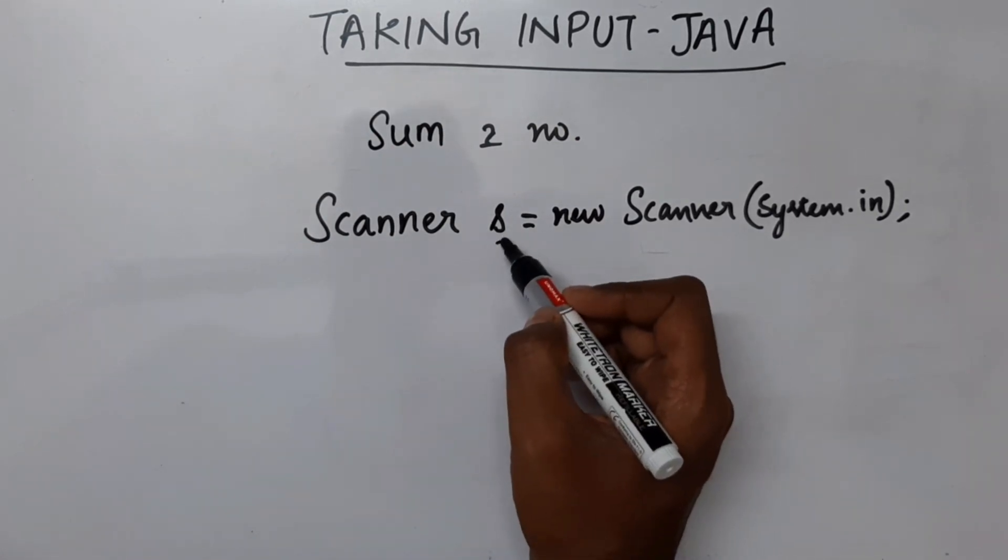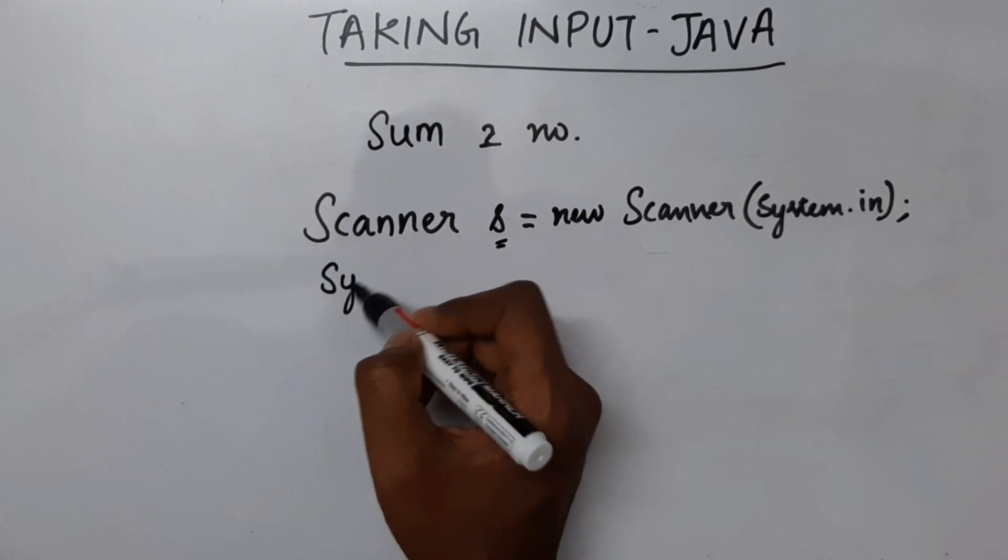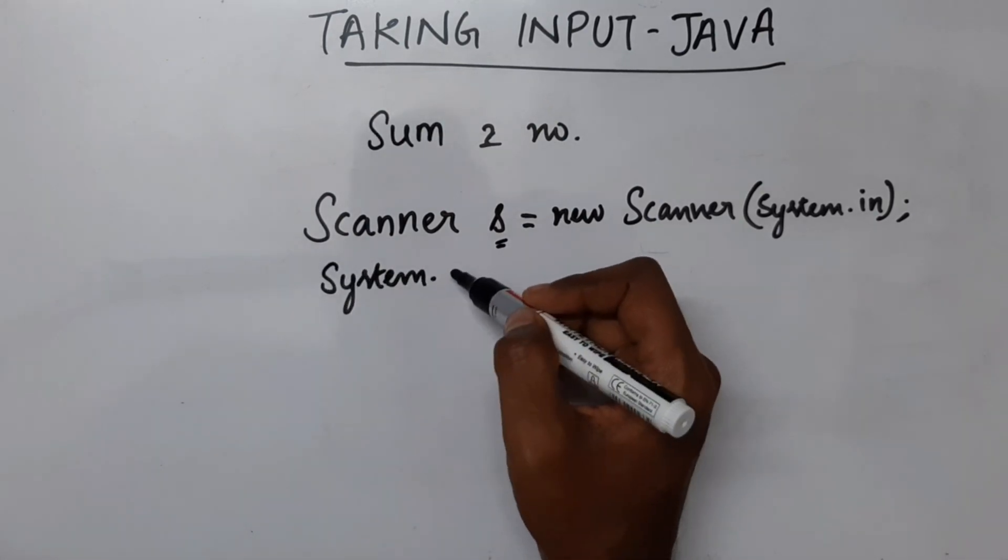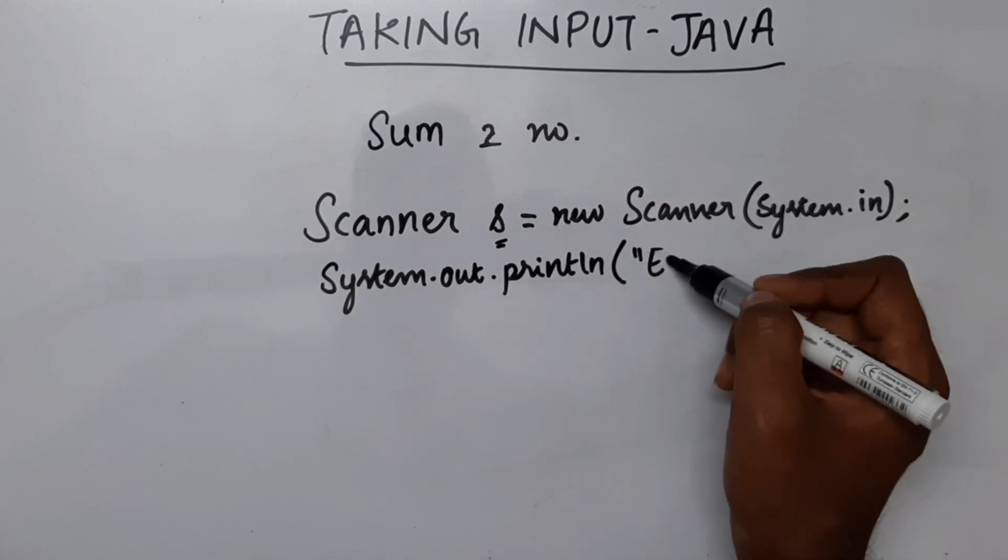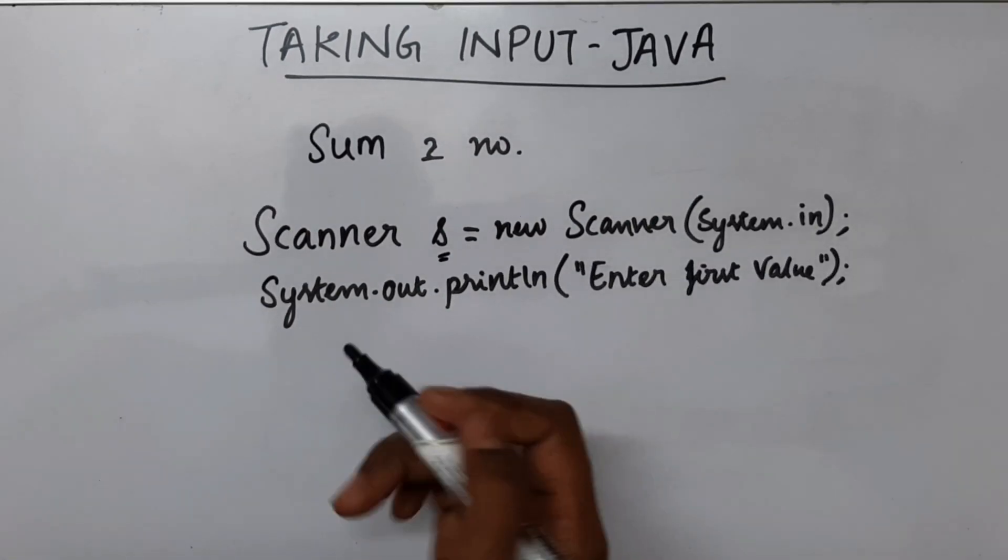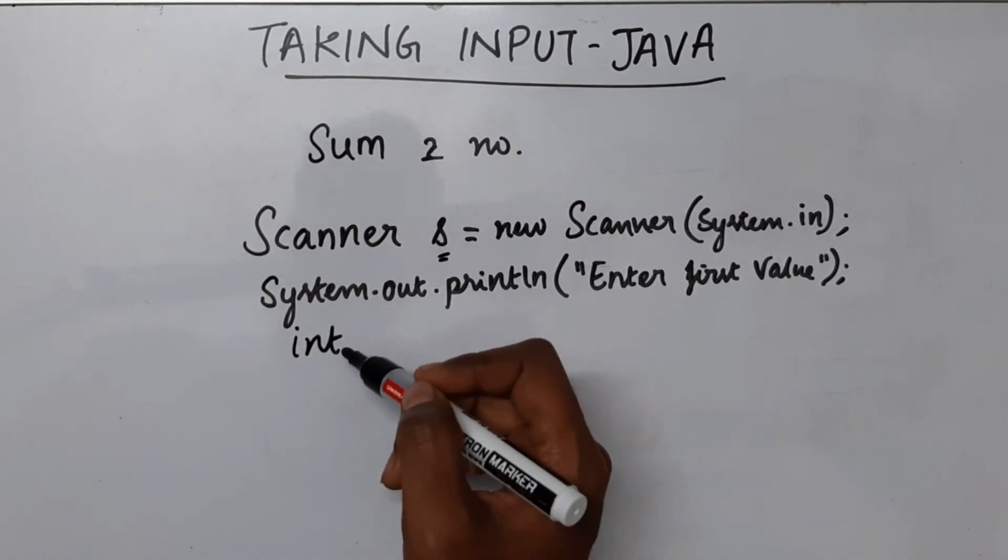So now I am going to use this object to get input from the user. So let me first tell the user to give me some value and say enter first value. Now I will create an integer where I will be storing the value which the user is giving.